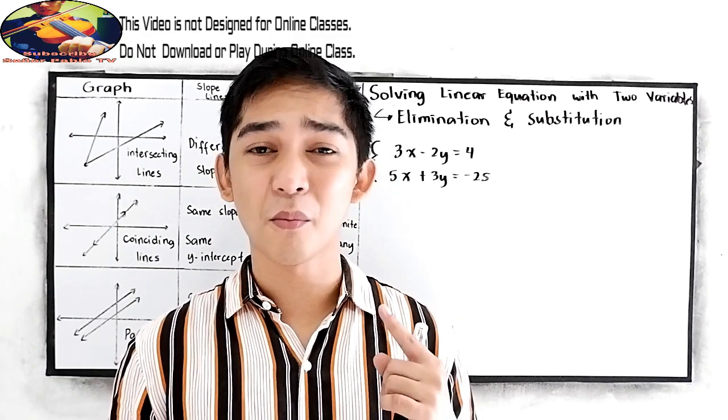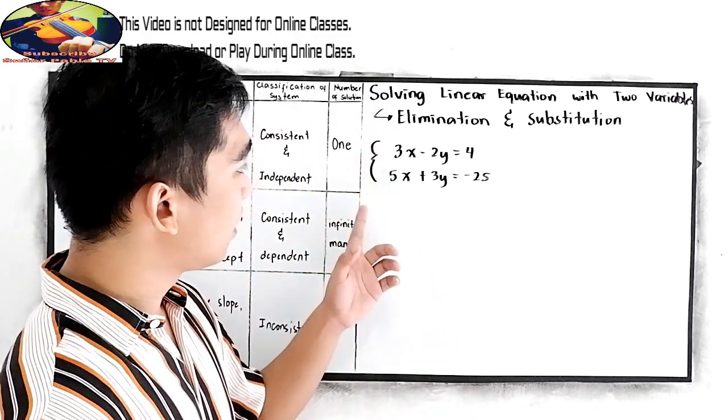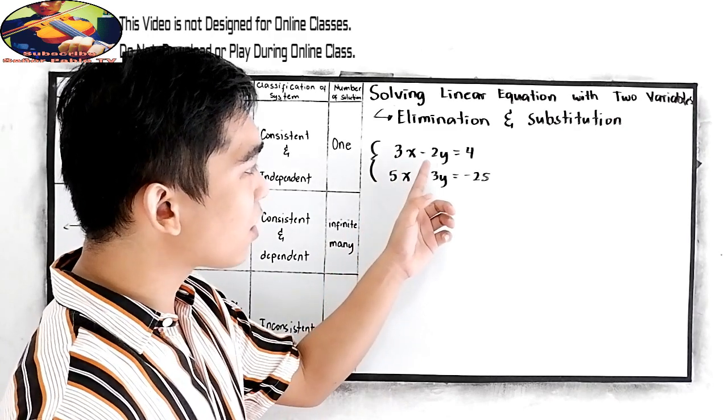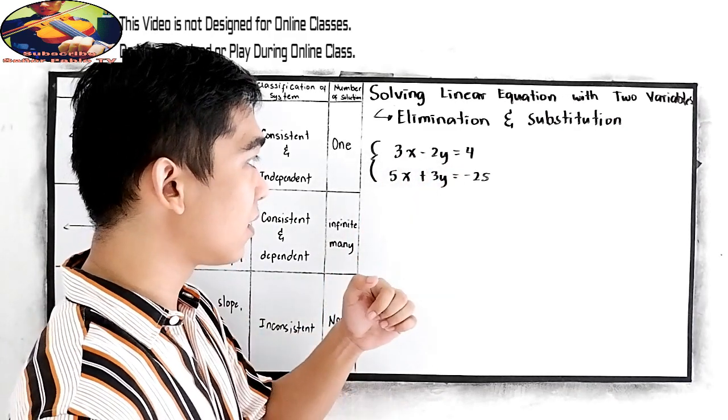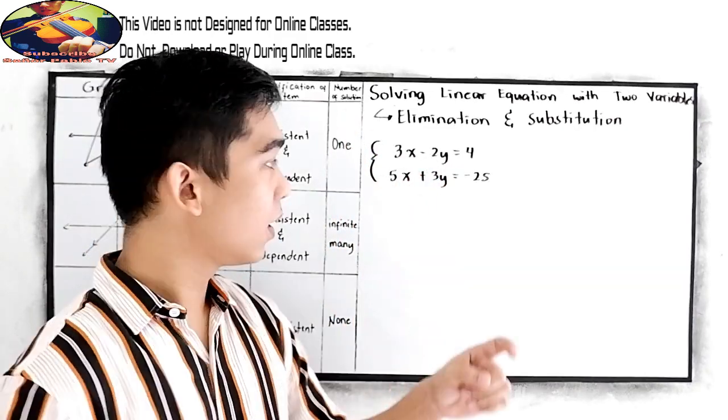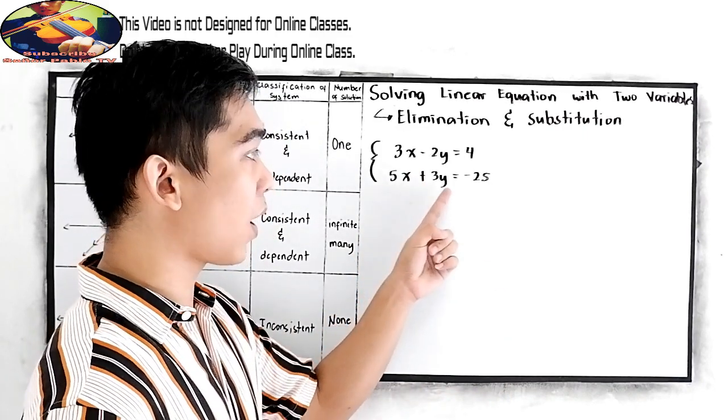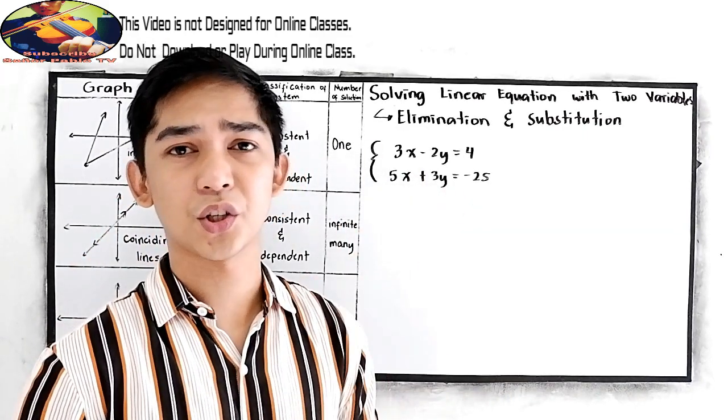So let's try our example number one. 3x minus 2y is equal to 4 for our first equation. And 5x plus 3y is equal to negative 25 for our second equation.